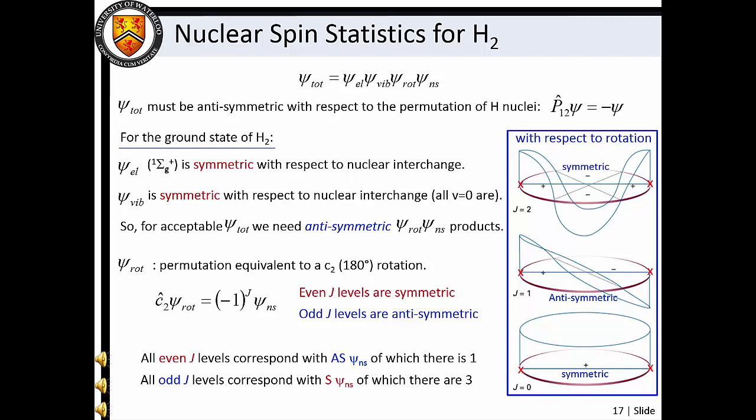Owing to the Pauli exclusion principle, nuclear spin statistics are an important consideration for any rotational motion that exchanges indistinguishable particles. We have demonstrated this for a simple homonuclear diatomic molecule, but similar effects are observed for polyatomic species like water, where two identical hydrogen atoms can be exchanged by rotation, or ammonia, where three identical hydrogen atoms can be exchanged.